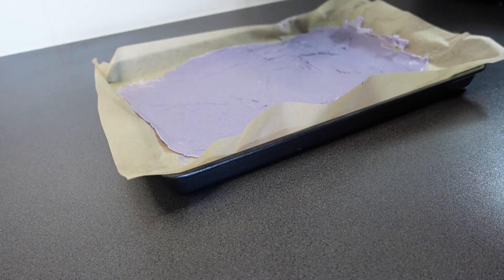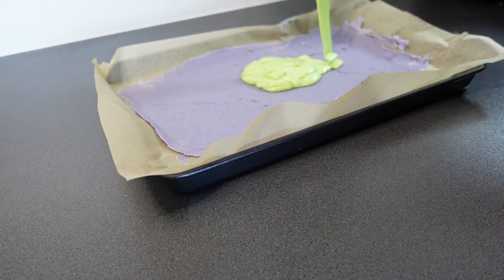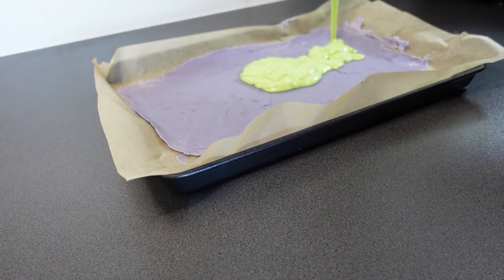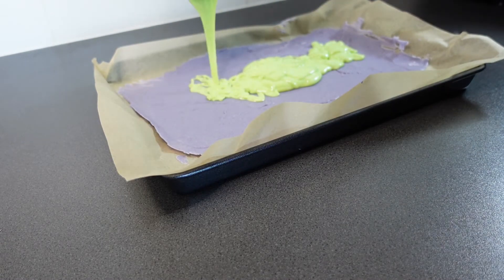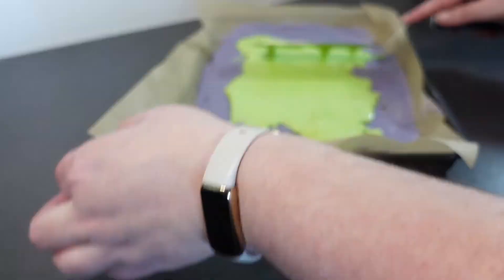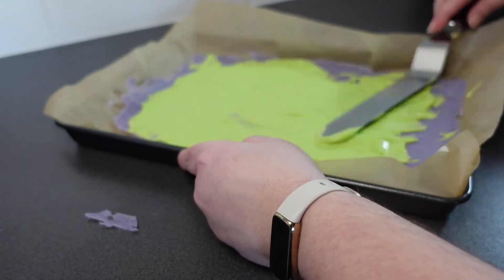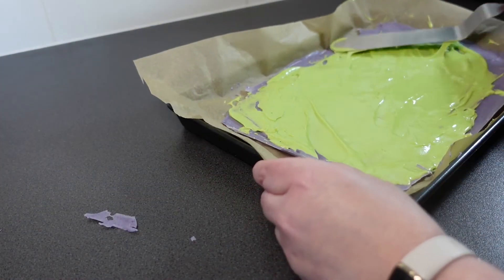We are now going to cover the first layer with the second layer of chocolate and we are not going to do what I did and accidentally crack the bottom layer. Once you have finished covering it, put it back in the fridge to cool or you can start covering it in some decorations whilst it's still pliable.